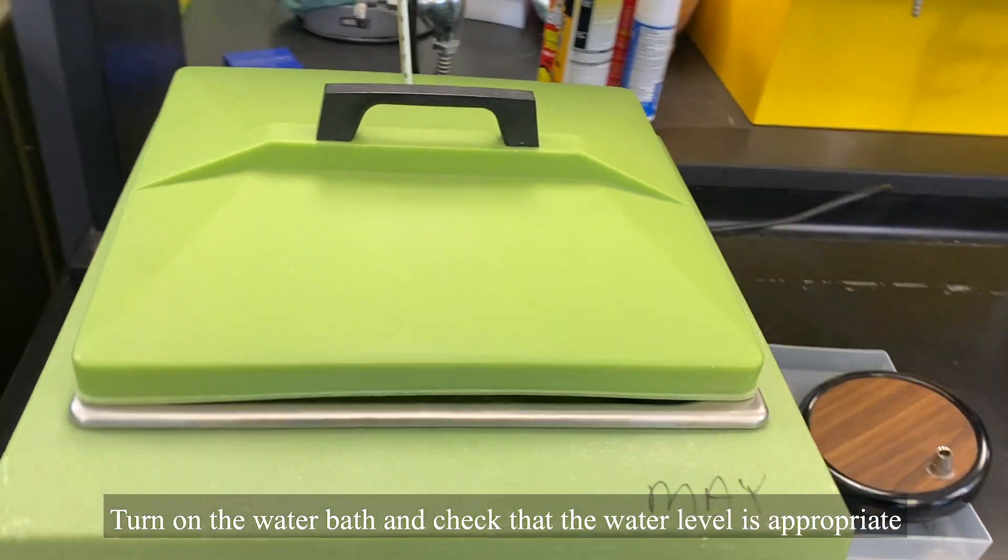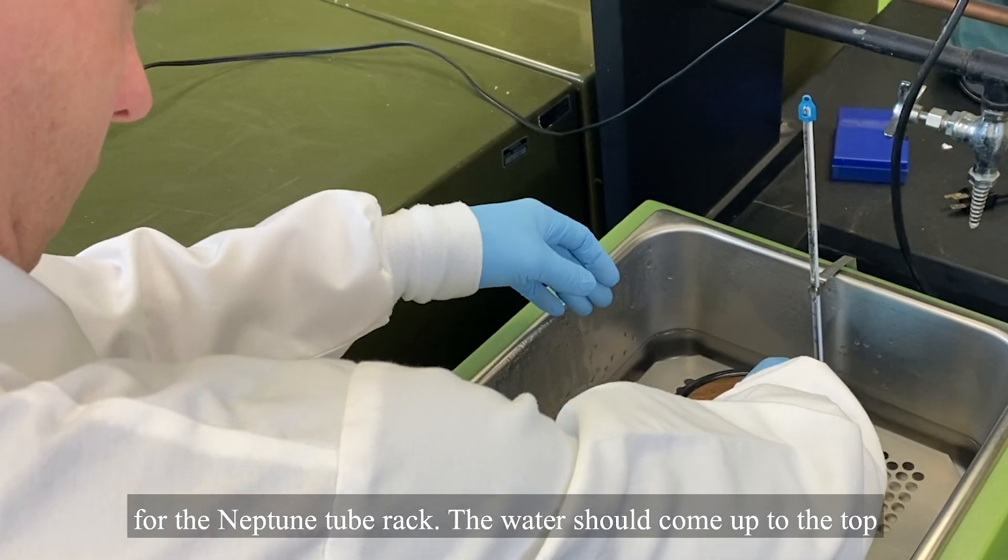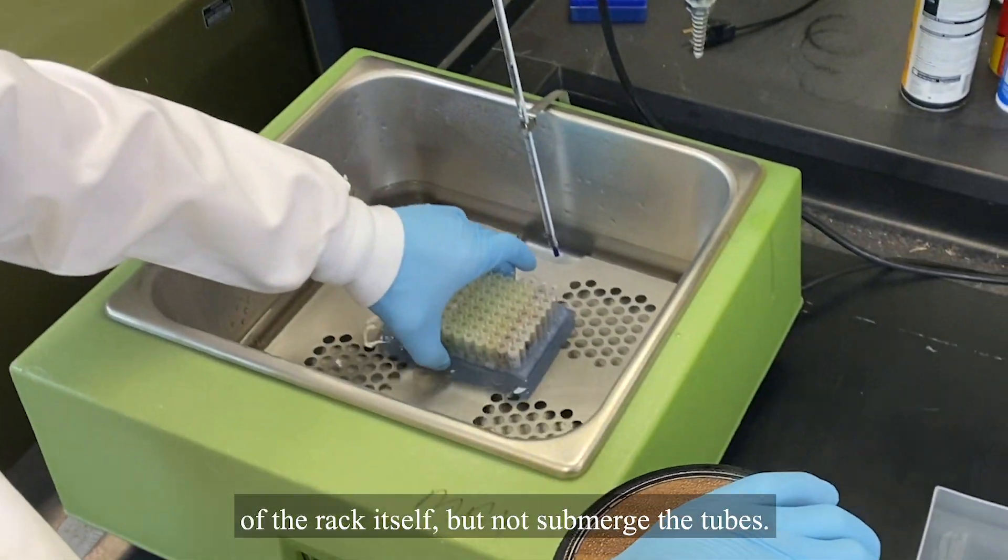Turn on the water bath and check that the water level is appropriate for the Neptune tube rack. The water should come up to the top of the rack itself, but not submerge the tubes.